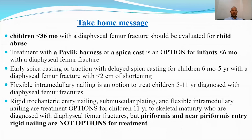Take-home messages: Children below 36 months with a diaphyseal femoral fracture should be evaluated for child abuse. Treatment with a Pavlik harness or hip spica is an option for infants below 6 months with a diaphyseal femoral fracture. Early spica casting or traction with delayed spica casting is for children between 6 months to 5 years with shortening less than 2 cm.